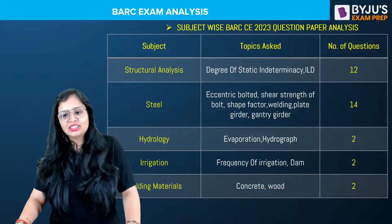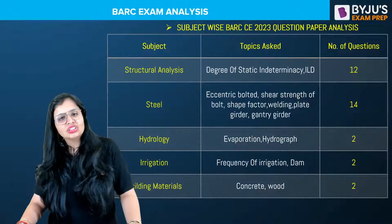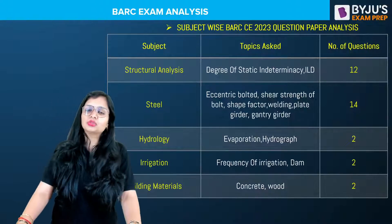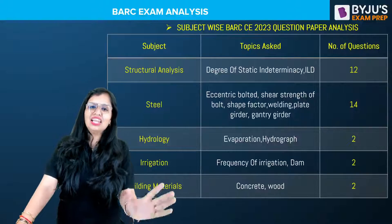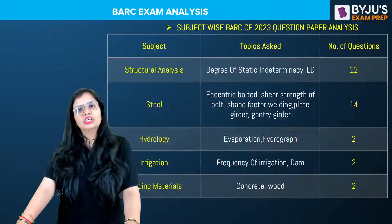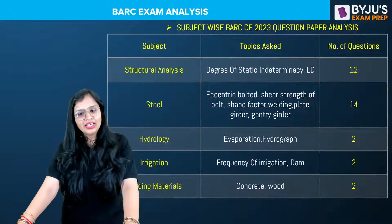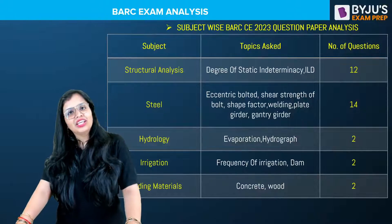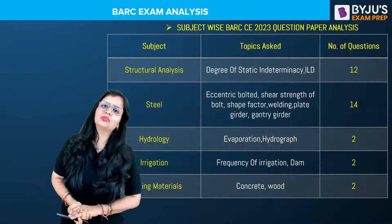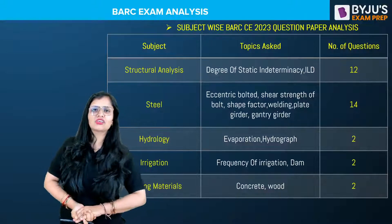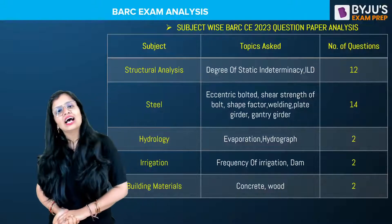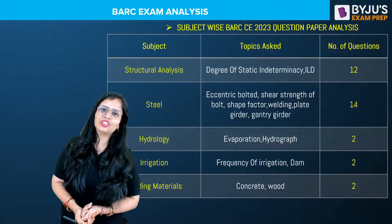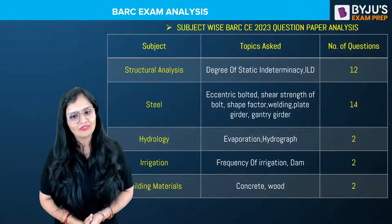For Hydrology, there were two questions — evaporation and hydrograph — but one question was very lengthy, so students skipped it. For Irrigation, questions on frequency of irrigation, field capacity, and permanent wilting point were given, asking you to calculate frequency of irrigation. One question related to a dam was also there.